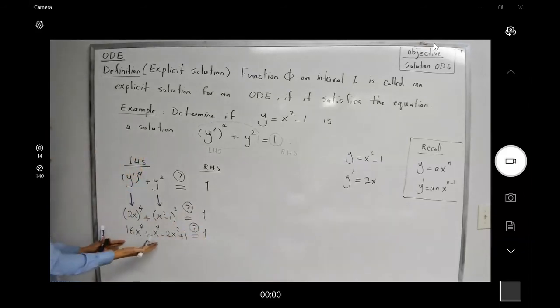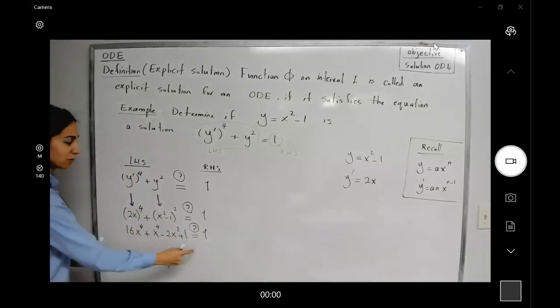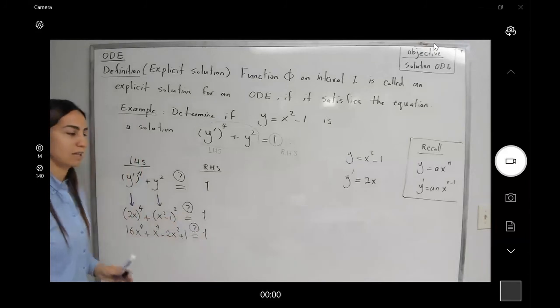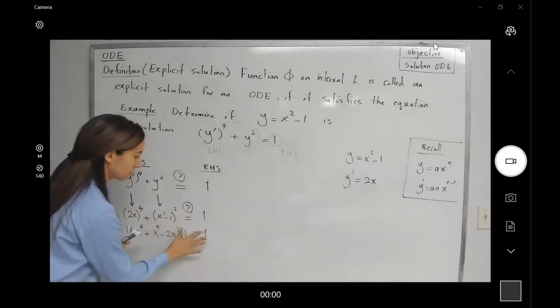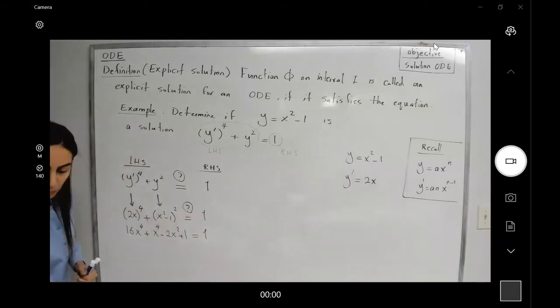On the left-hand side, you have an expression with degree four. On the right-hand side, you only have a constant. So obviously, they are not equal to each other.